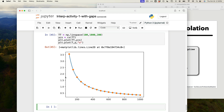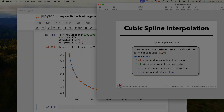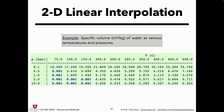I want to talk a little bit about 2D interpolation and then start prepping the stage for regression. I'm only going to give you an overview of how it operates — the math is not incredibly difficult, it's doable. I used to give it as a bonus problem on exams. But I will explain how the process works.